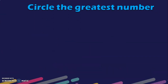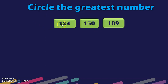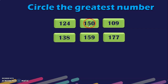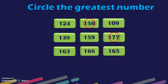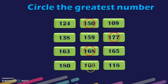Let us move on to the next exercise: circle the greatest number. Comparing 124, 150 and 109 — the 100s place is the same, so look at the 10s place: 2, 5 and 0. Since 5 is the greatest, 150 is the greatest number. Next question: the answer is 177. Next: 163, 168 and 165 — the greatest number is 168. Next: 180, 180, 108 and 118. The 100s place is the same, so look at the 10s place: 8, 0 and 1. Since 8 is the greatest, 180 is the greatest number.